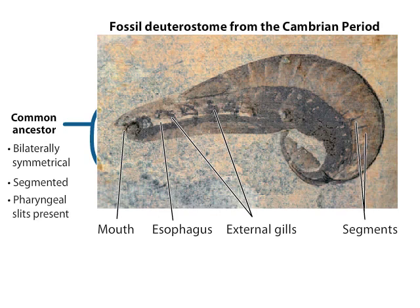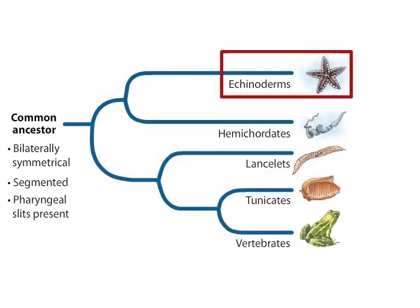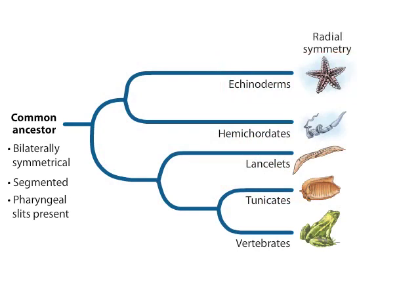Pharyngeal slits are gill-like openings between the throat, or pharynx, and the outside of the body. If we look at adult echinoderms, it is easy to wonder why they are grouped with other deuterostomes. Adult echinoderms have radial symmetry, not bilateral symmetry. However, their young — the larvae — are actually bilaterally symmetrical.